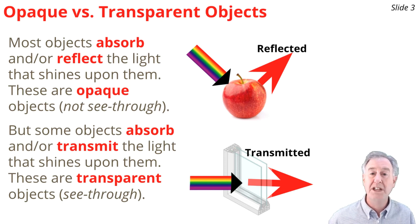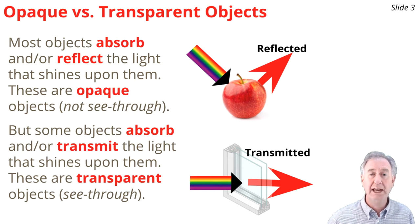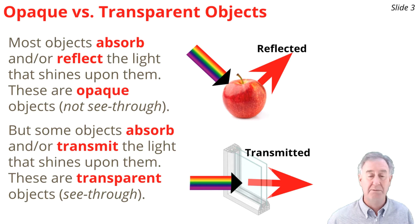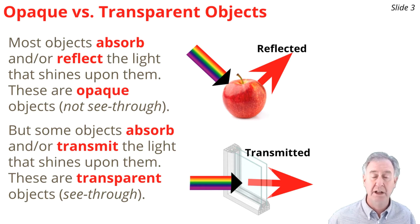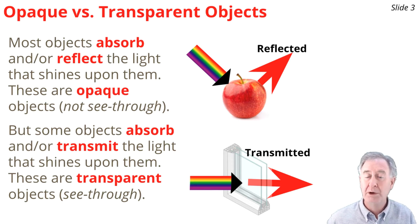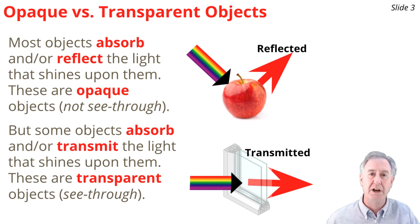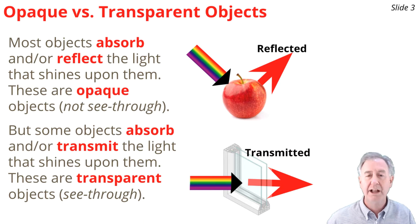Transparent objects can be seen through. A window is an example of a transparent object. When light reaches one side of the window, some of it can get absorbed, some of it might be reflected, but a good portion of it would pass through the window, which is why you can see through windows. Transparent objects are objects that allow the transmission of light.